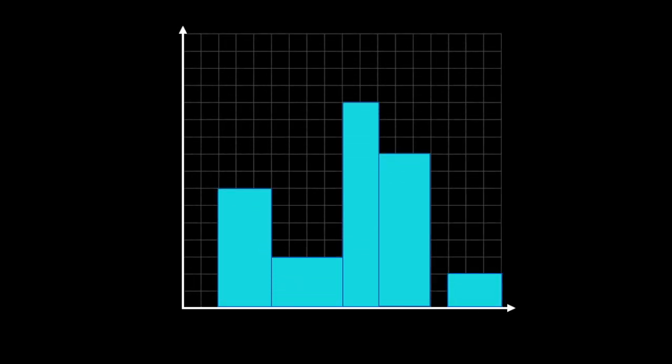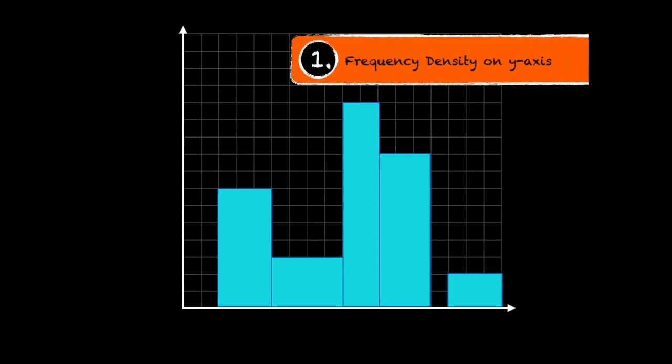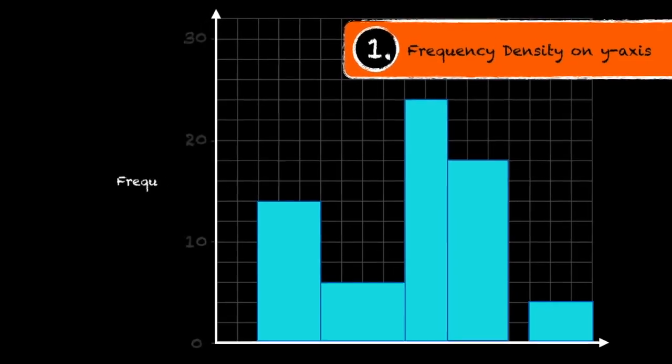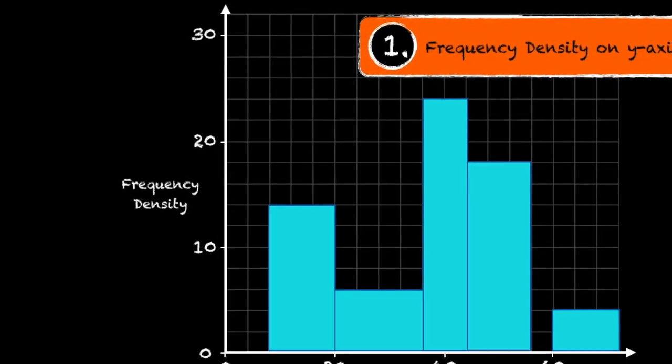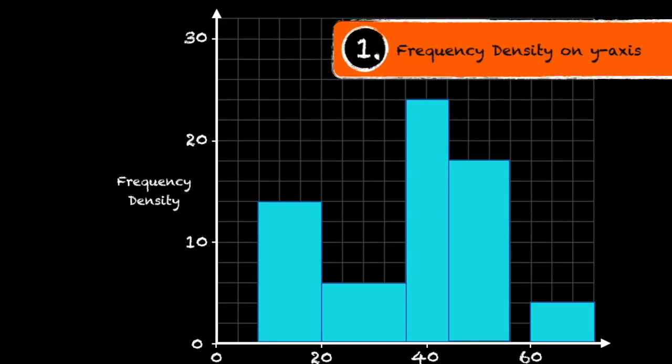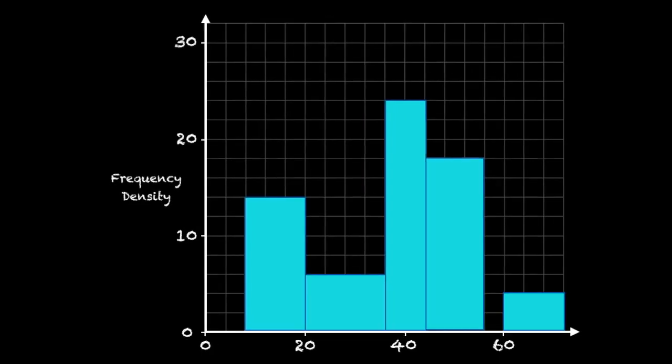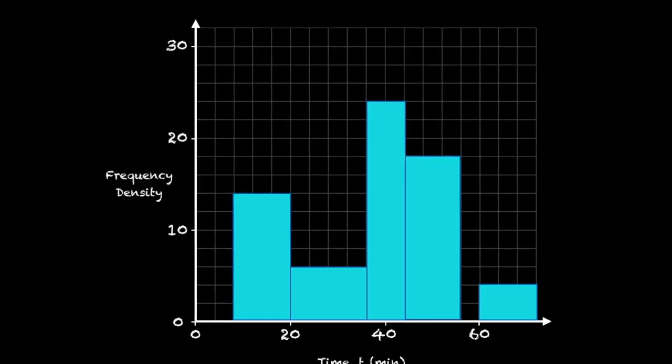Let's begin by stating some of the defining characteristics of a histogram. Number one is that frequency density always goes on the y-axis of a histogram. And we'll talk more about frequency density and how to calculate it in just a moment.